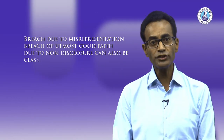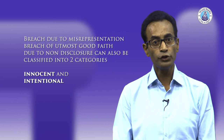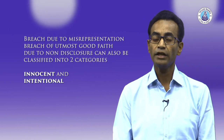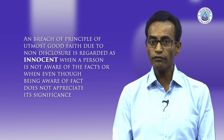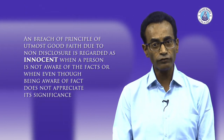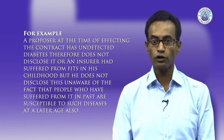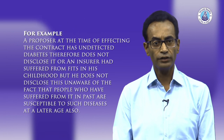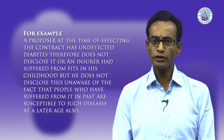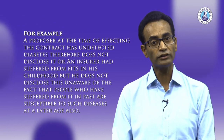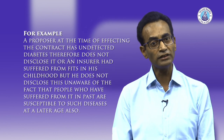I will now discuss breach of utmost good faith due to non-disclosure. Like breach due to misrepresentation, breach of utmost good faith due to non-disclosure can also be classified into two categories: innocent and intentional. Breach due to non-disclosure is regarded as innocent when a person is not aware of the fact, or when even though he is aware of the fact, does not appreciate its significance. For example, a proposer at the time of effecting the contract has undetected diabetes and therefore does not disclose it, or an insured had suffered from fits in his childhood but does not disclose this, unaware that people who have suffered from it in the past are susceptible to such diseases at a later age also.